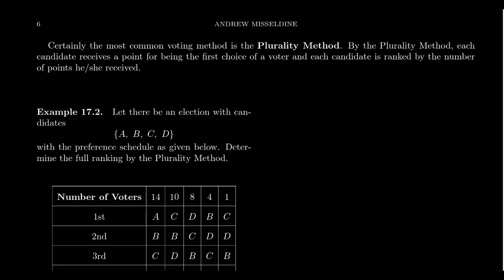In our previous video, we introduced an example of a math club election that was kind of weird in that anyone could win the election depending upon the voting method that we introduced. So in the election, we have candidates, we have voters who vote for the candidates, but the election method itself has a huge impact on the outcome of the election.